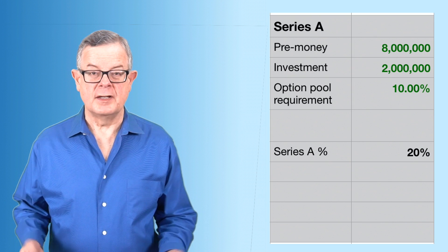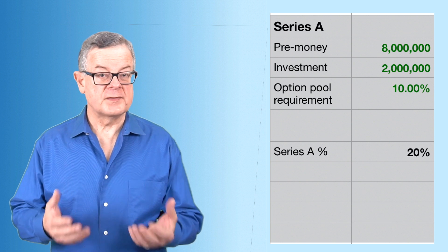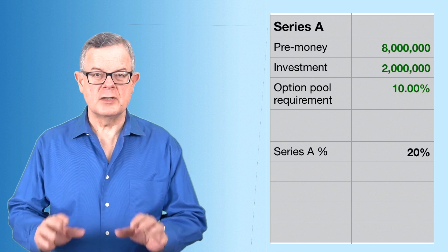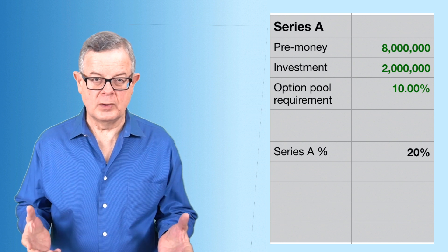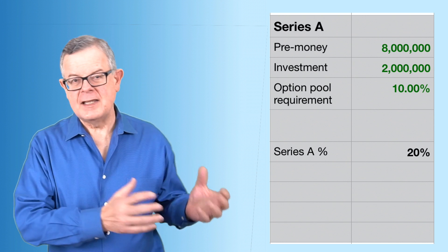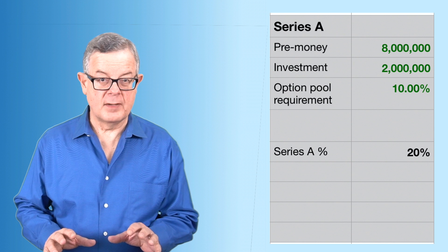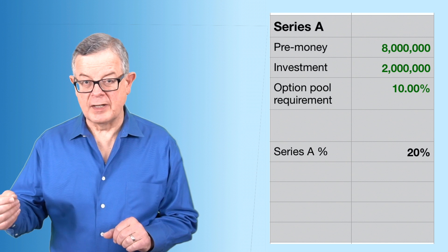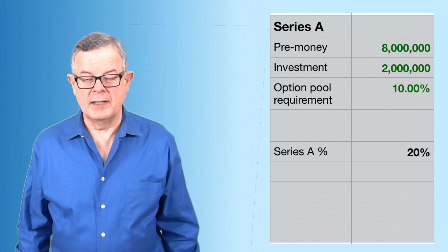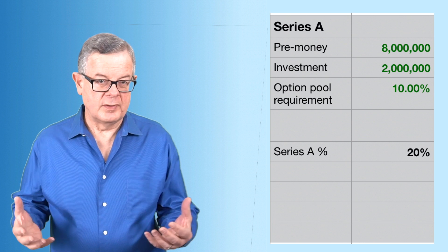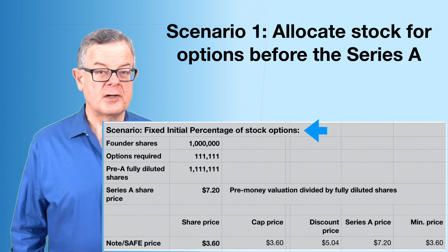Next, we assume there's a Series A investment. The Series A investor gives a pre-money valuation of eight million dollars and invests two million. They require that upfront you issue an additional 10 percent of the company's shares to build up your option pool. Without any convertible securities converting, this implies the Series A investors would own 20 percent — they're investing two million, the post-money is ten million, and two million is 20 percent of that.